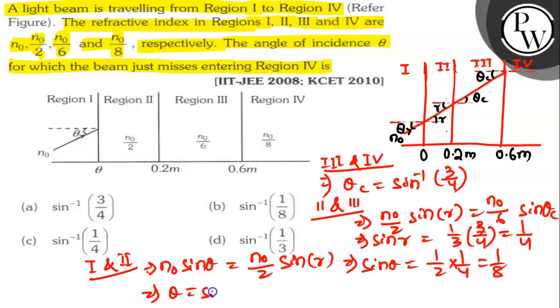So, here θ will be sin inverse 1 by 8. Hence, the answer is sin inverse 1 by 8. Option B is the correct answer. Thank you.